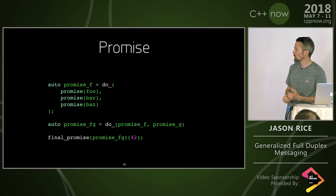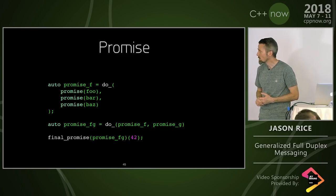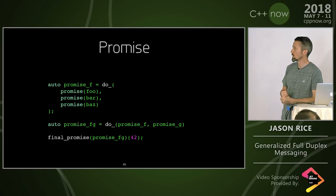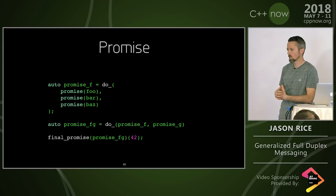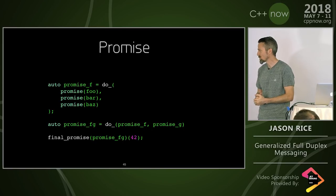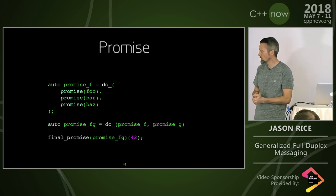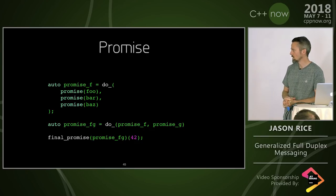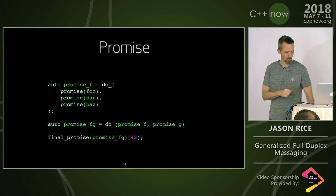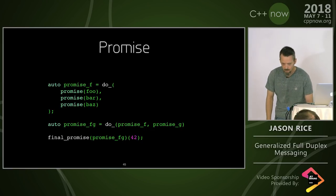Here's an example of this promise interface. There's a 'do' that takes a variadic list of promises and returns a promise — you can imagine how it's implemented: it would just take a promise, put all the sub-promises in a tuple, and return itself. That was really simple to implement. So promise FG was easy — you just do 'do, promise F, promise G.' When you finally want to execute it with some input value, you have this final promise, which in my implementation is an implementation detail — that's what you give the input value.